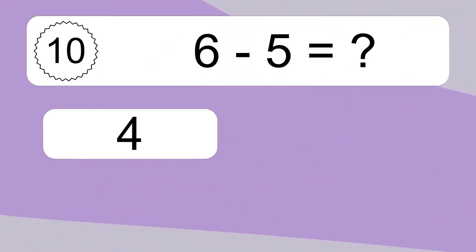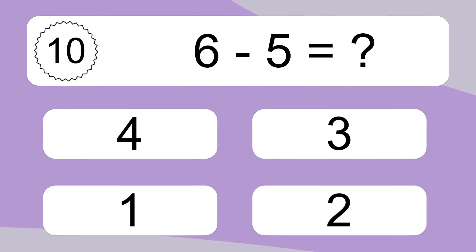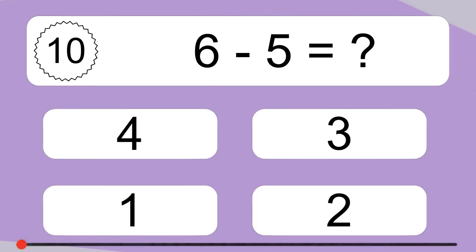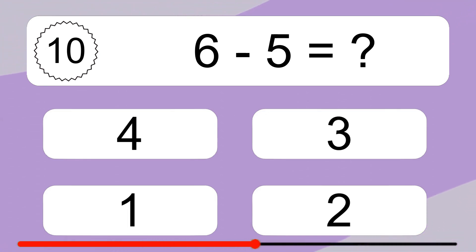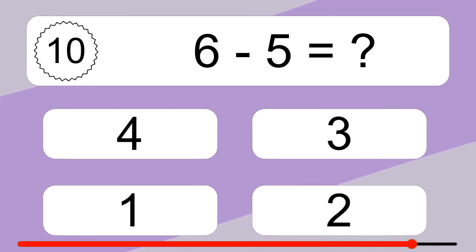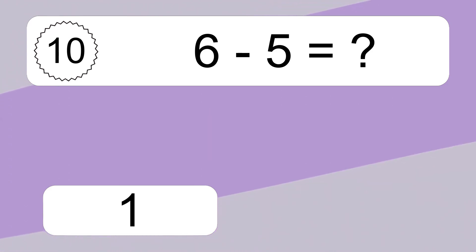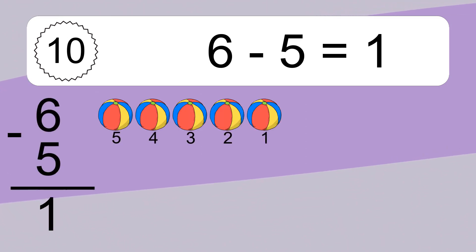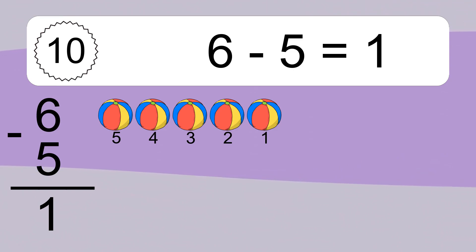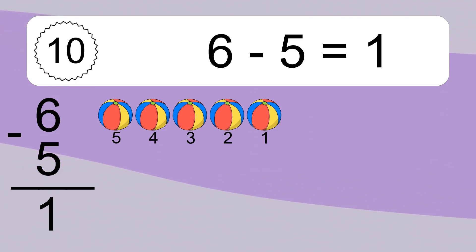6 minus 5 equals what? 6 minus 5 equals 1. Let's count it: 5, 4, 3, 2, 1.